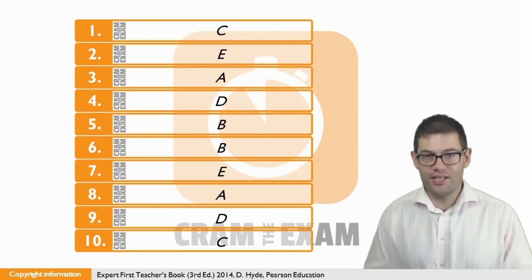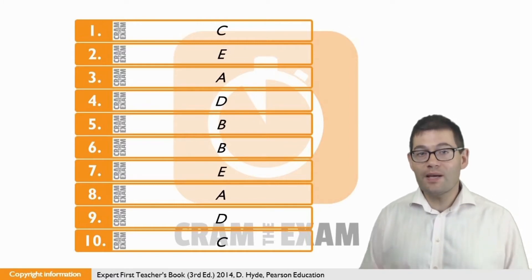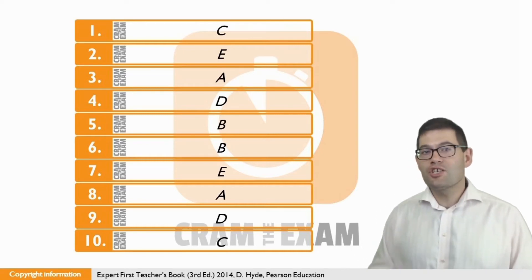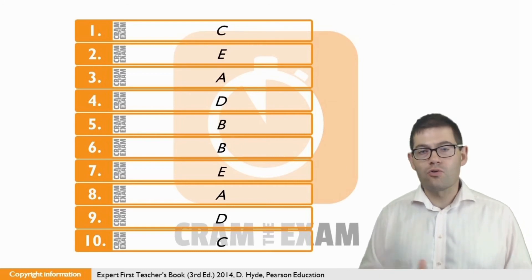For question ten, the answer is C. Jeanette admits that they have given money out of a feeling of guilt. The feeling of guilt is seen in C, when she says she feels ashamed when walking past when it's cold or raining.